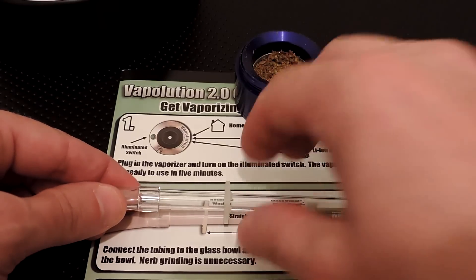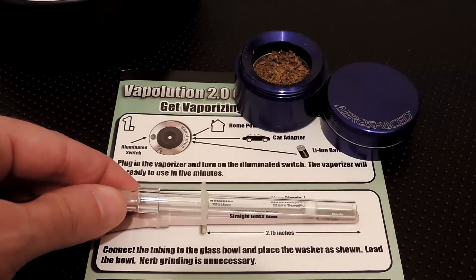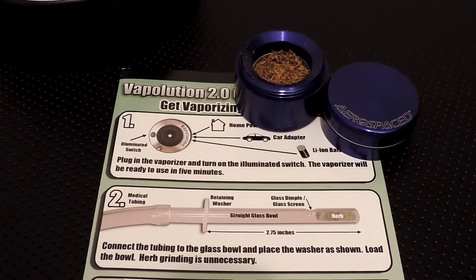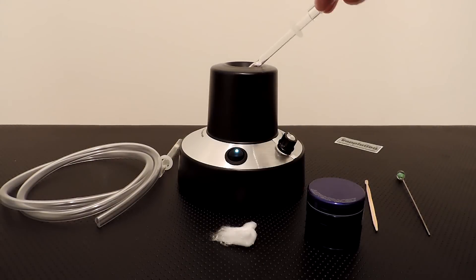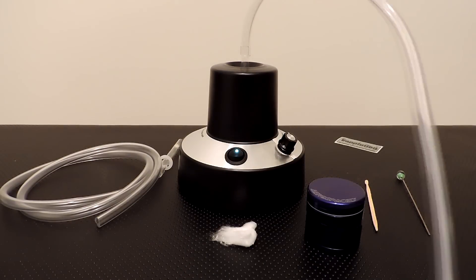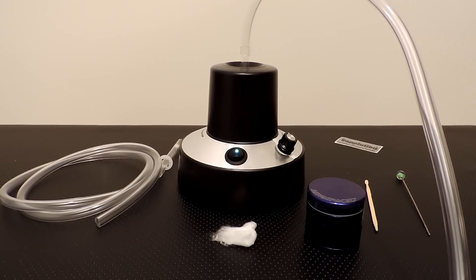If you haven't set the washer to the right distance, go ahead and do that. There's a guide in the manual that tells you exactly where to put it. Then insert the wand into the hole and let it rest on the washer that you have expertly applied at the right distance.